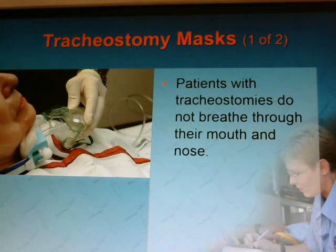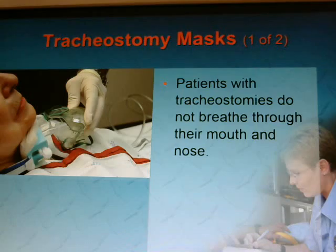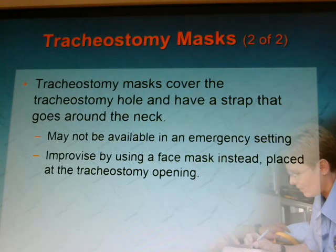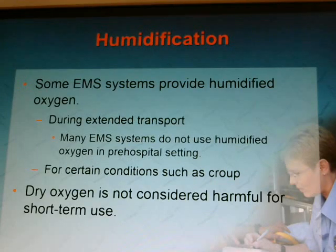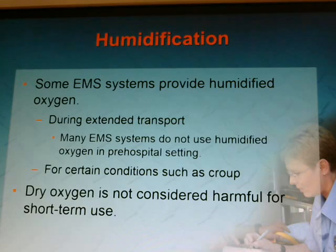Patients with tracheostomies do not breathe through their mouth or nose — they breathe through the hole in their neck. A tracheostomy mask covers the hole and has a strap that goes around the neck, though it may not be available in an emergency setting, so improvise by placing a face mask over the trach opening. Regarding humidification: some EMS systems provide humidified oxygen during extended transport, some do not. For certain conditions such as croup, dry oxygen is not considered harmful in short-term use.